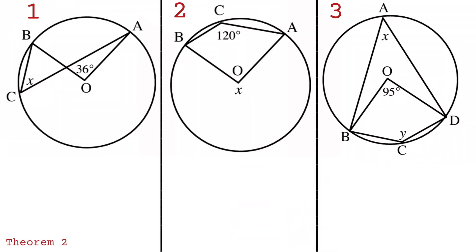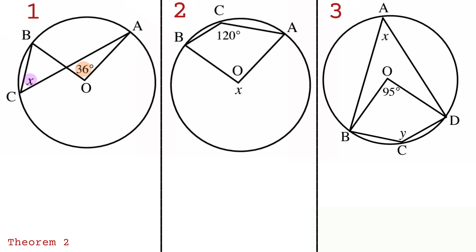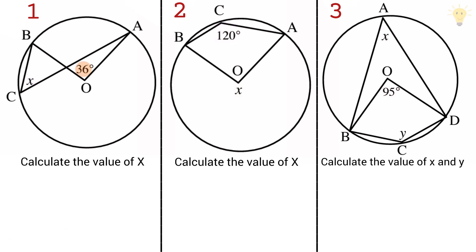For Theorem 2, I'm going to add one more example so that you get a full understanding of what this theorem is about. In simple terms, this theorem states that the angle at the center is twice the angle at the circumference. To find the value of x in the first example, we divide 36 by 2, which gives us 18. So x is equal to 18 degrees.